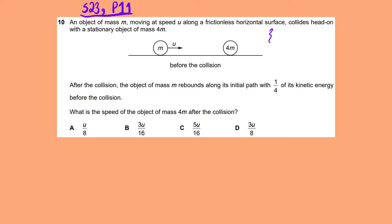After the collision, the object of mass m rebounds along its initial path with one-fourth of its kinetic energy before the collision. What is the speed of the object of mass 4m after the collision? So there's no problem here. We know what happens afterwards. All we know is that this m is going towards the left, and we know its kinetic energy. Kinetic energy has become one-fourth.